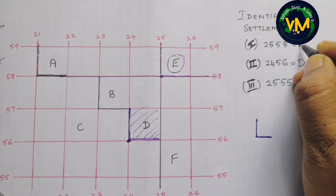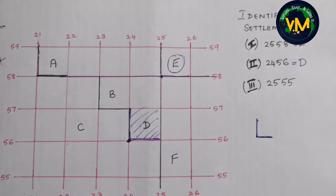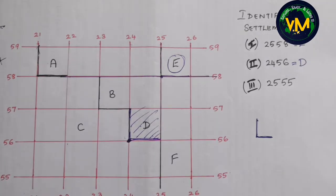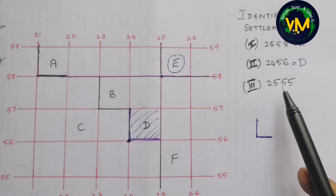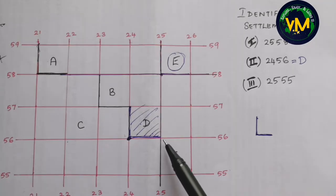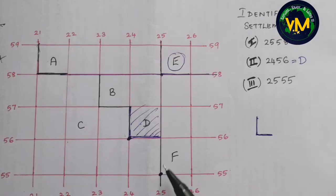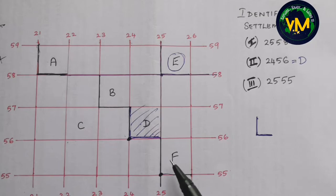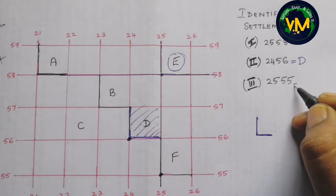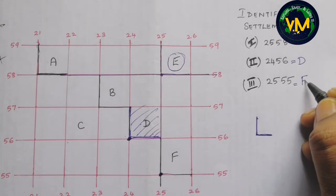Now find which settlement is present in grid 2555. Line 25 is the easting and line 55 is the northing. This is the point of intersection, so when we draw the L, this will be the square. The answer is settlement F.